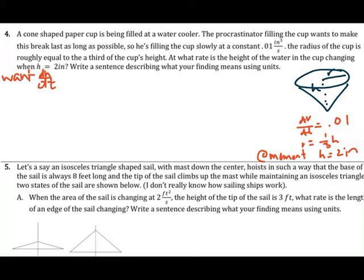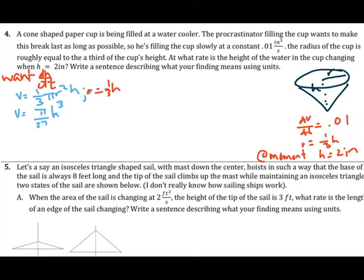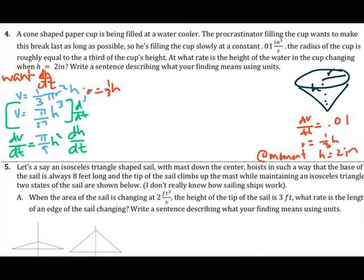The volume of a cone is (1/3)πr²h. Substituting r equals h/3 gives r squared equals h²/9. Combining this with the formula, volume becomes π/27 times h cubed. Differentiating with respect to t: dV/dt equals (π/9)h² dh/dt, since the 3 from h cubed drops down and simplifies with 27.